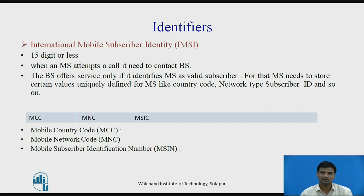When an MS attempts a call, it needs to contact the base station. The base station offers service only if it identifies the MS as a valid subscriber. For that, the MS needs to store certain values uniquely defined for it, such as country code, network type, and subscriber ID. The IMSI number has three parts; the first part is called the Mobile Country Code.